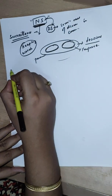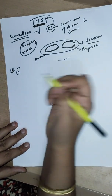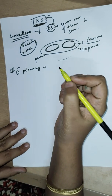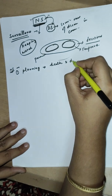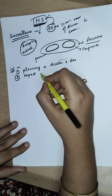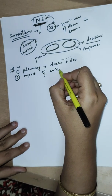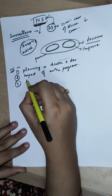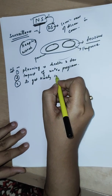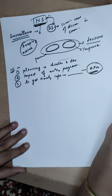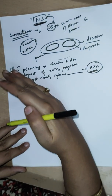Now we need to understand the importance of doing nutritional surveillance. Nutritional surveillance is done in a community in order to: number one, do planning — long-term planning regarding health and development of the community. Secondly, we want to see the impact of any nutrition-related program in a community. Thirdly, we also want to get timely information about the nutrition status of the community so that timely action can be taken to make improvements.